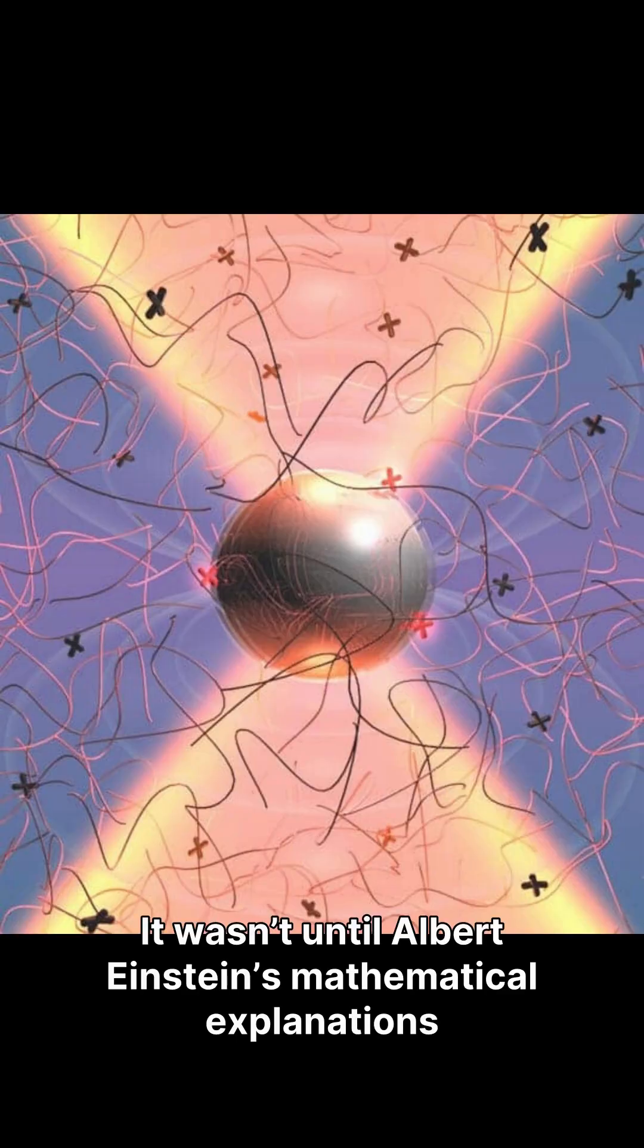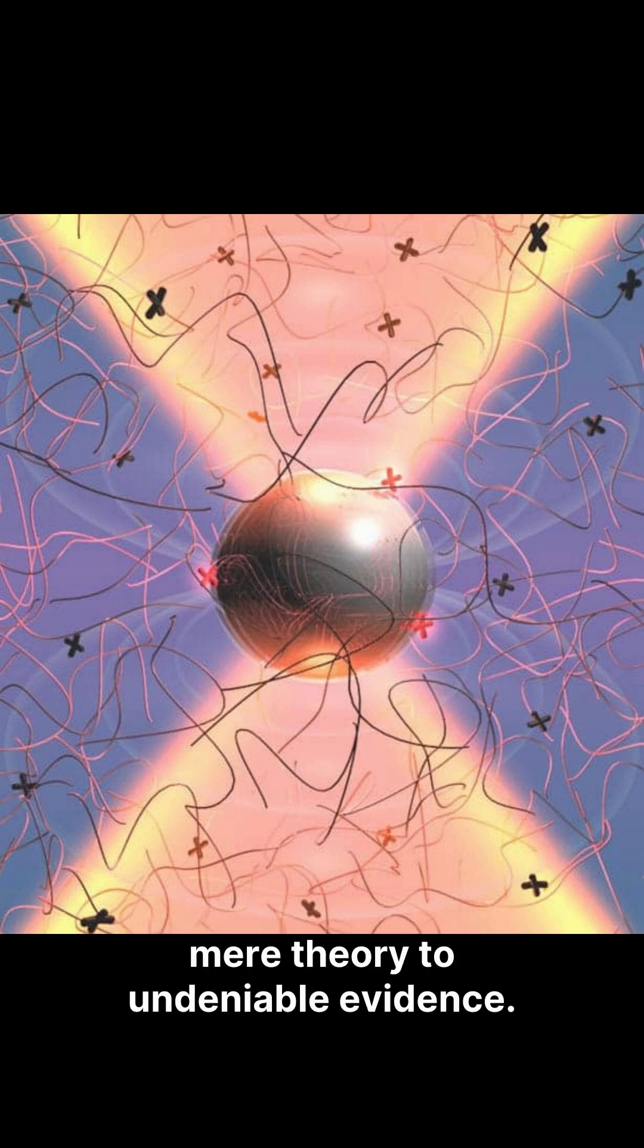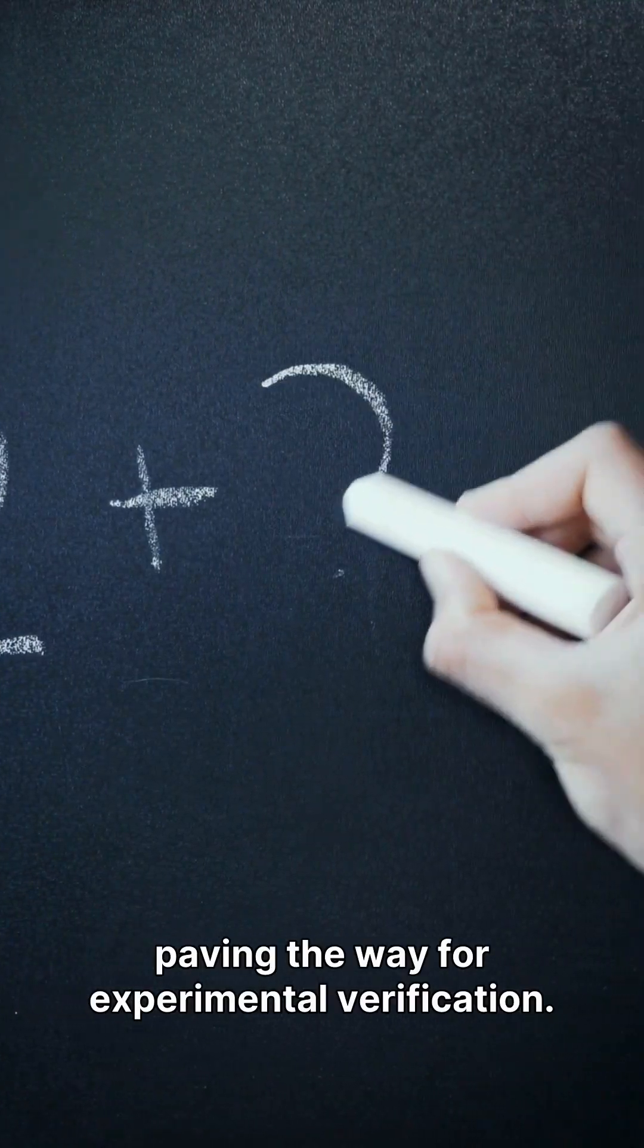It wasn't until Albert Einstein's mathematical explanations and 20th century technology that atoms transitioned from theory to undeniable evidence. His work provided a crucial theoretical framework, paving the way for experimental verification.